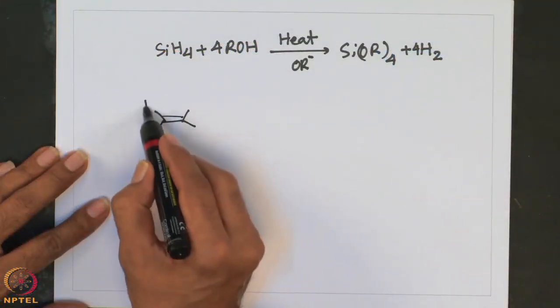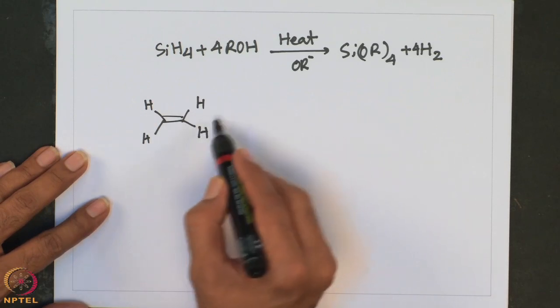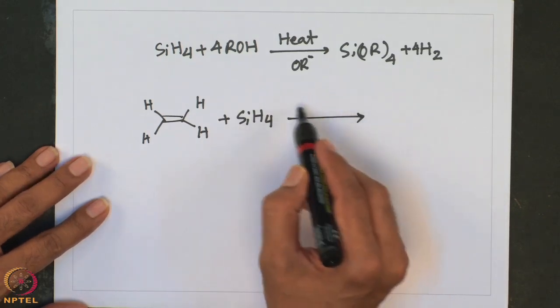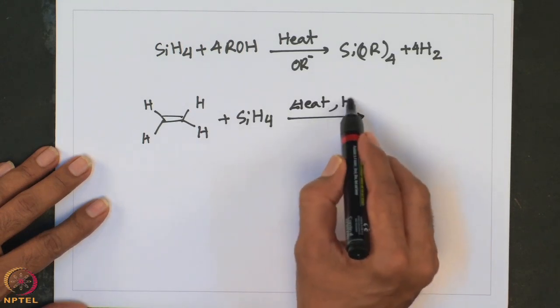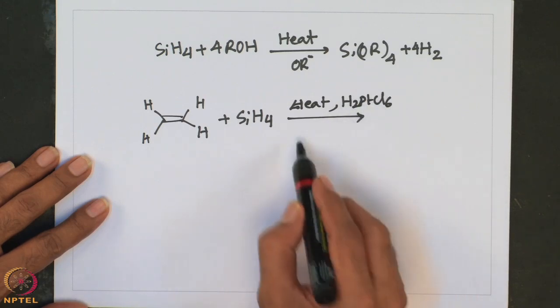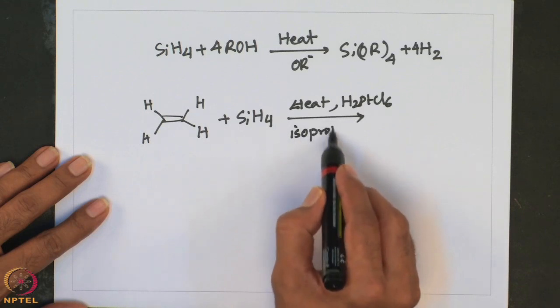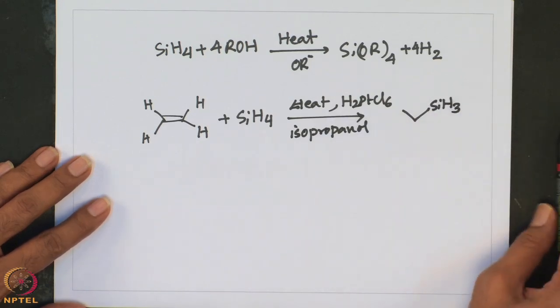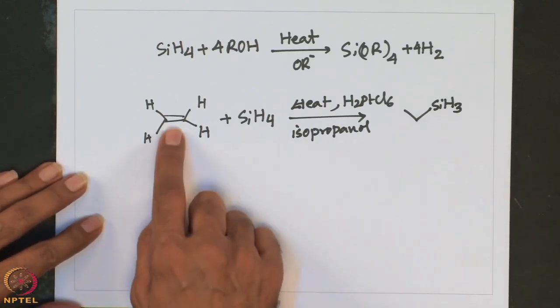In both industry and laboratory synthesis, radical pathways are essentially followed. In practice, it is usually performed under far milder conditions provided a metal complex is used as a catalyst. For example, consider a typical olefin such as ethylene. When treated with SiH4 in the presence of a catalyst such as platinic acid in isopropanol as a solvent, it gives the hydrosilylation product — an addition across the double bond.